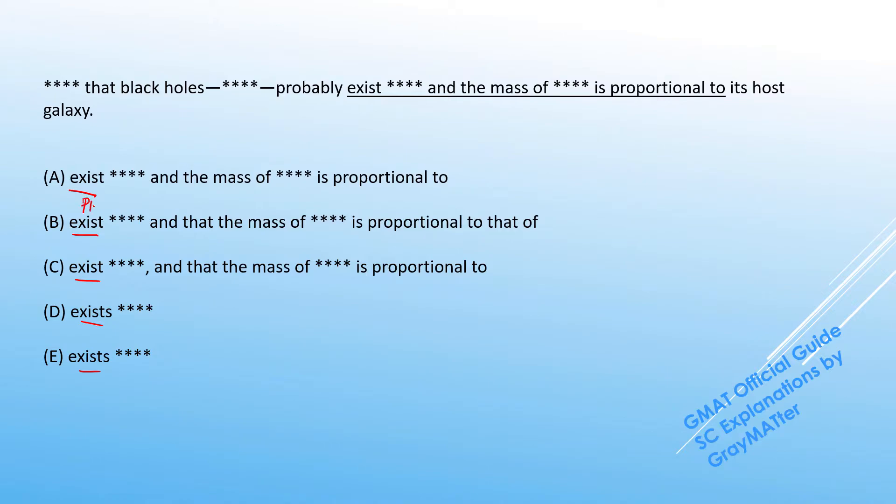Exist is obviously the plural verb and exists is singular. So we just need to check what is the number of the subject here. We can see from the non-underlined portion that scientists have found evidence that black holes—so this is a plural noun and so D and E go off because of subject-verb disagreement.